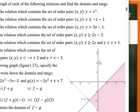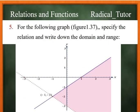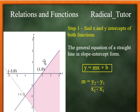Okay, so in figure 1.37 we have lines. This line and this line — the y-axis line functions. There is a shaded region, and this shaded region gives us the domain and range. Notice that we have two functions here, and we need to find the equation of each straight line.